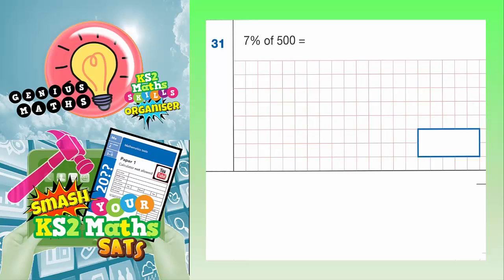Question 31. 7% of 500. Well, there's a couple of ways you could do this.